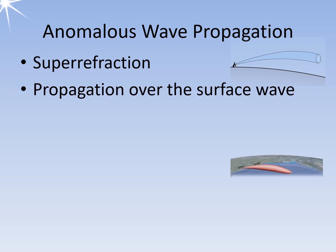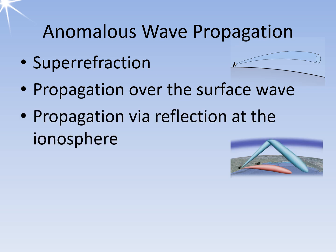At extremely low frequencies, the waves propagate as surface waves and follow the contours of the earth's surface. Frequencies in the higher shortwave range are reflected on their way there and back by layers of the ionosphere and can thus indirectly overcome the curvature of the earth.